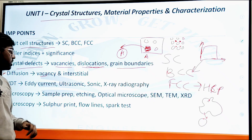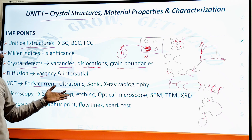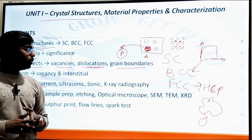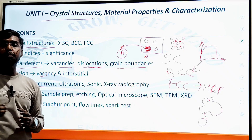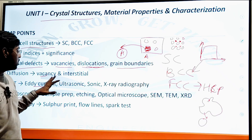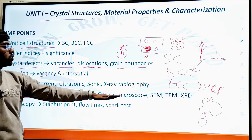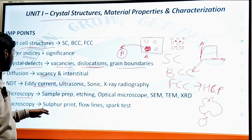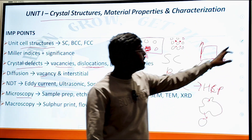After that, diffusion — classified into vacancy diffusion and interstitial diffusion. Then NDE methods: eddy current, ultrasonic, and X-ray. For these topics, you need to draw the diagram, write the working principle, then state the application, advantages, and disadvantages. Similarly for microscopy: SEM and TEM.